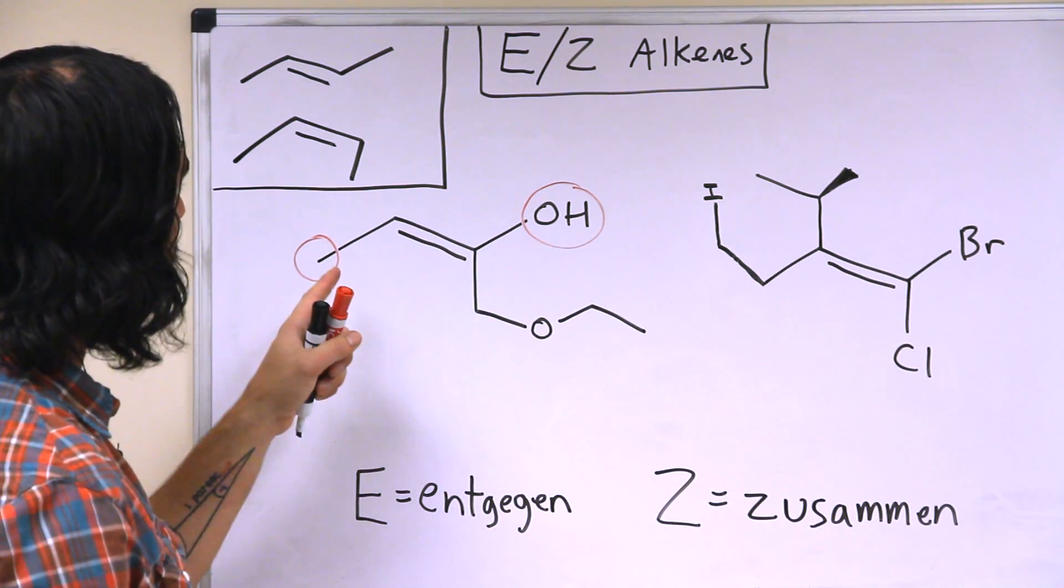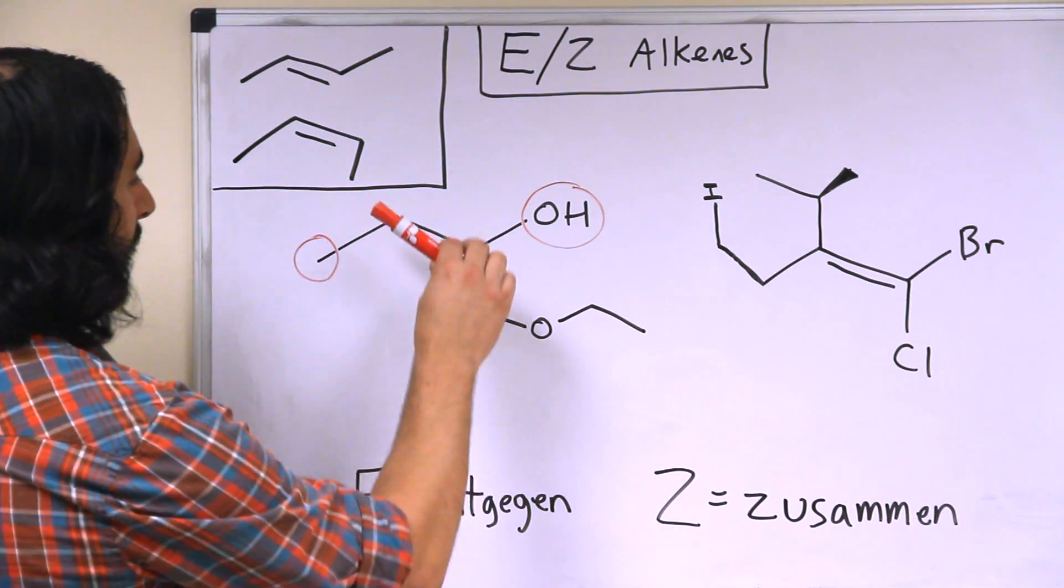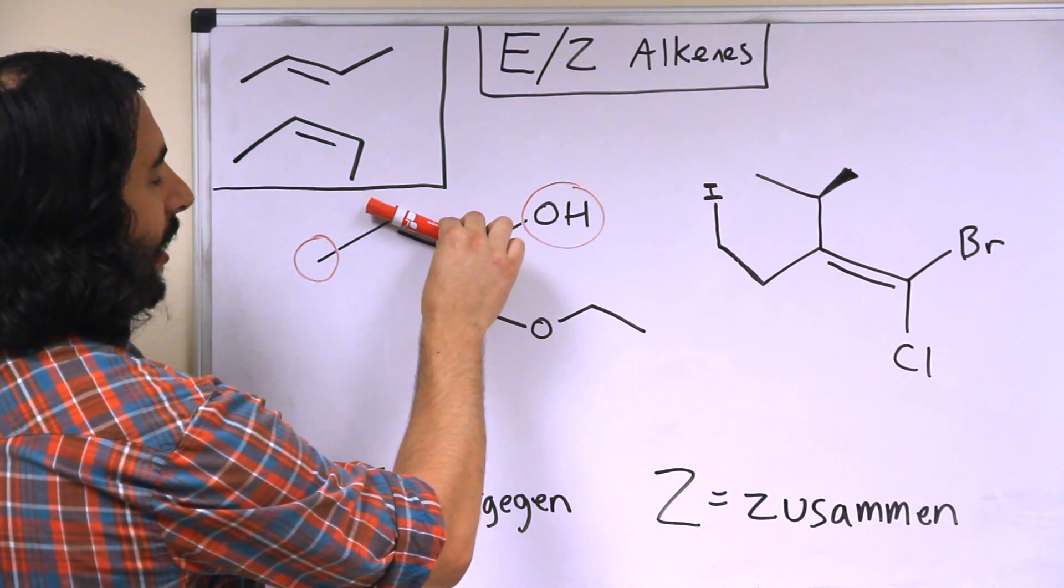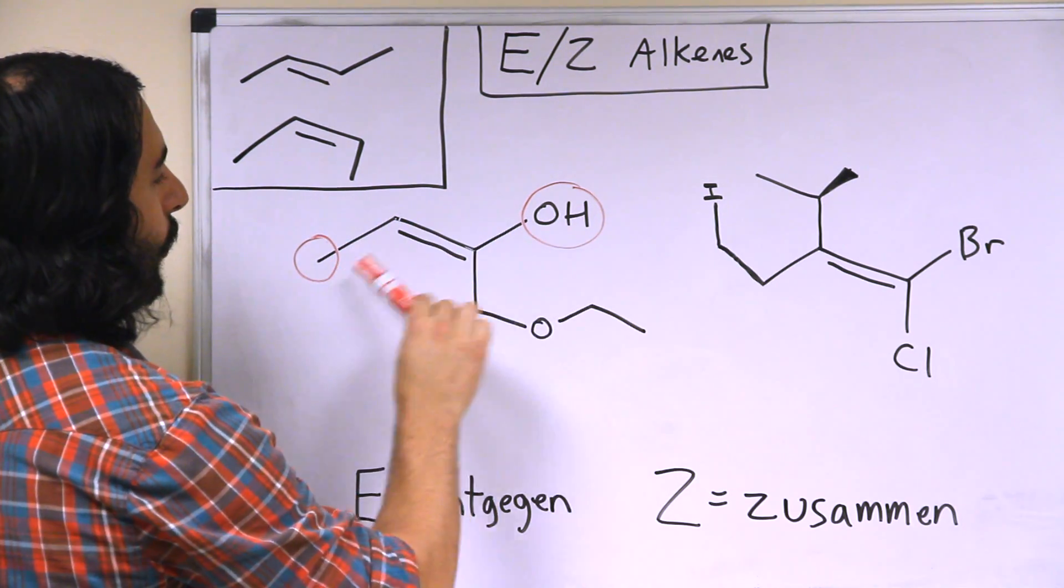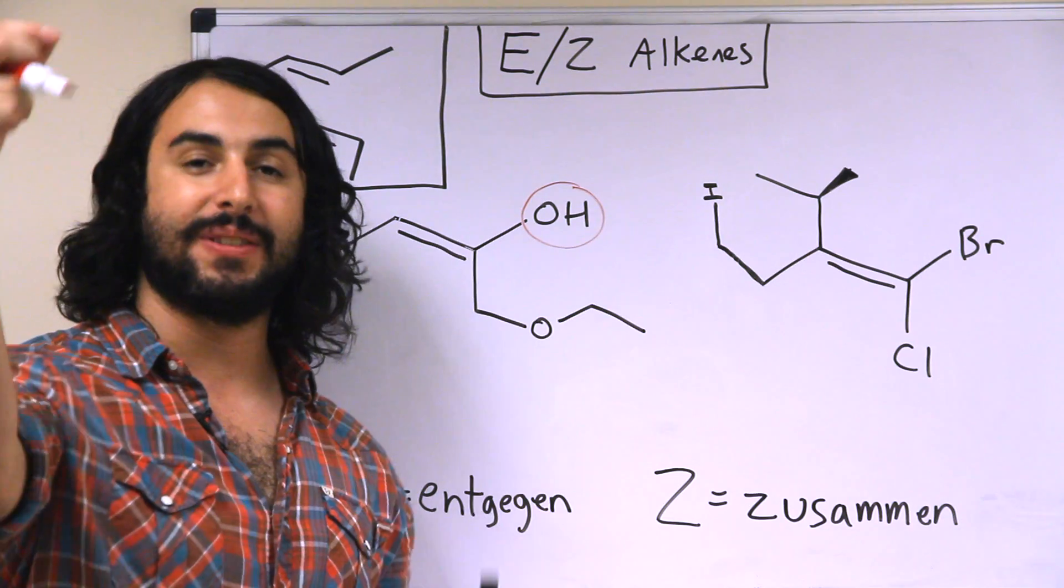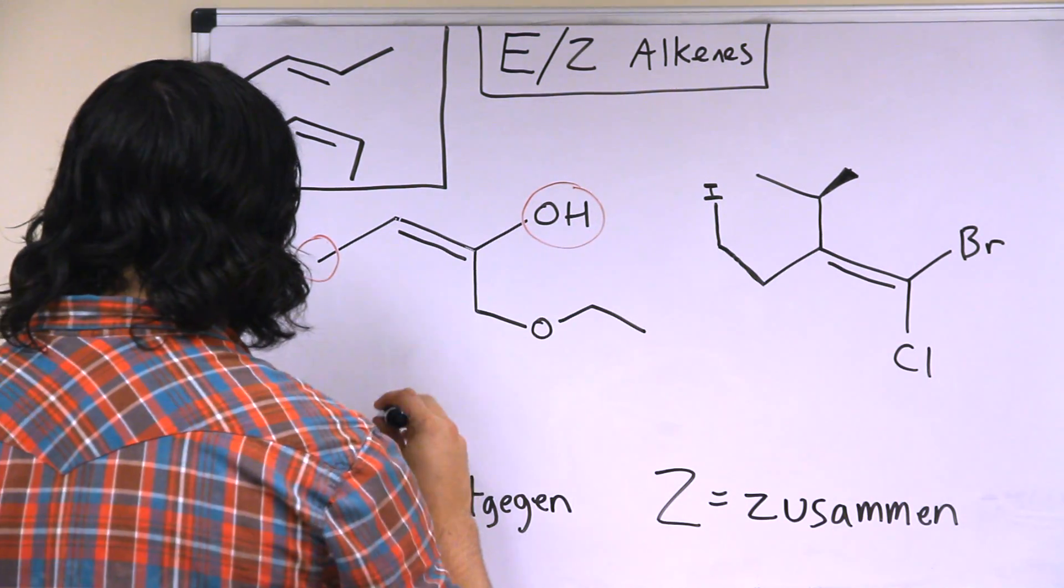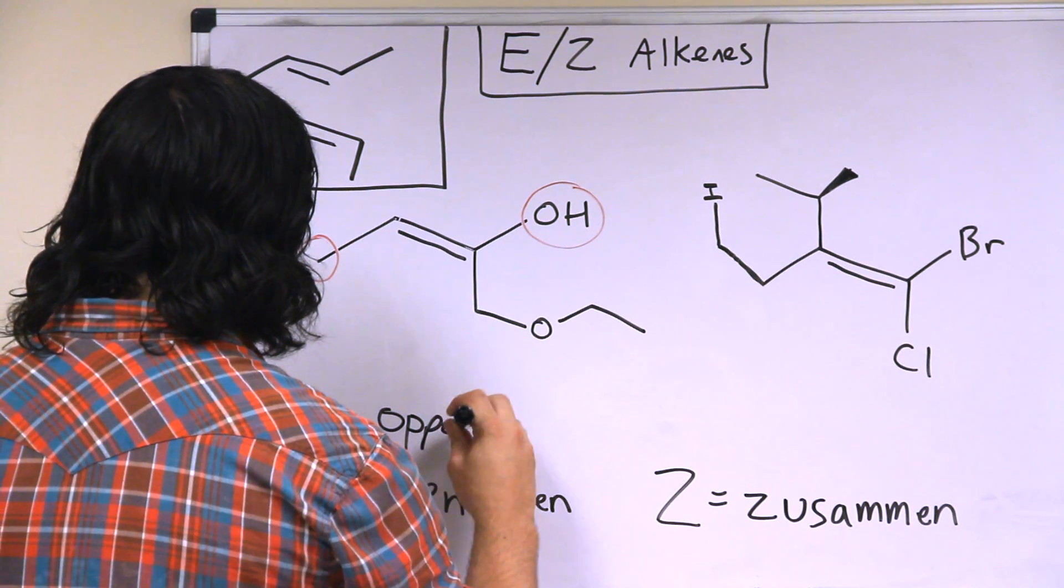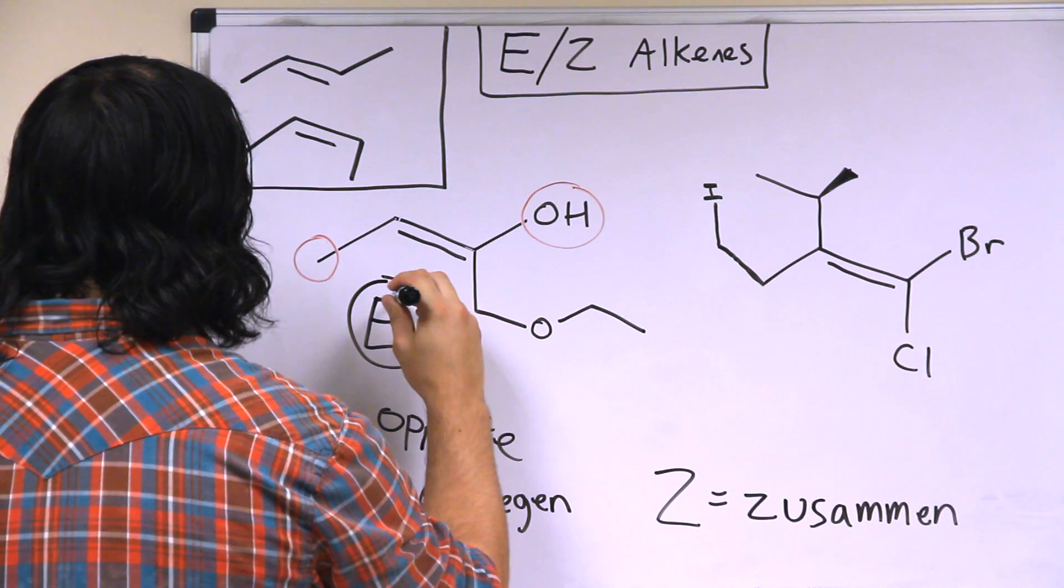So once we have determined which two groups take the priority, now all we're doing is looking at the plane of the double bond here, and we're seeing that the two groups, the two top priority groups, are on opposite sides of the double bond. And so opposite sides means that this is an E alkene.